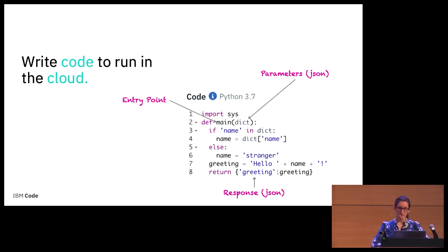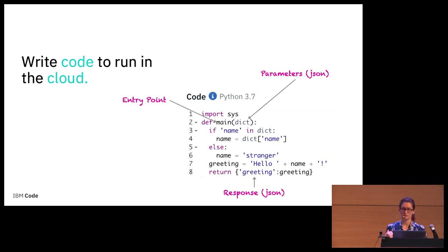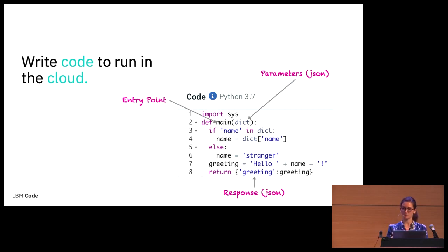Let's take a quick peek at what a function might look like. It should look familiar — it looks like Python code. It's a simple hello world function that checks if a name was passed in as a parameter; if not, it returns 'hello stranger,' otherwise it returns 'hello' with the name passed in. For OpenWhisk and IBM Cloud Functions, the expected input and output is JSON, so you can tie various functions together with JSON in a sequence. The expected entry point is a function named main.